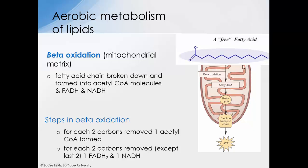This diagram shows beta oxidation very simply — the breakdown of a fatty acid chain producing acetyl-CoA. Just as acetyl-CoA derived from glucose breakdown enters the Krebs cycle where it is further broken down, this is exactly the same pathway for fatty acids. Once the acetyl-CoA is produced, it enters the Krebs cycle and produces NADH and FADH. The FADH and NADH produced also give up their electrons to the electron transport chain, located in the inner membrane of the mitochondria, and this is really where most of the ATP is produced via oxidative phosphorylation.